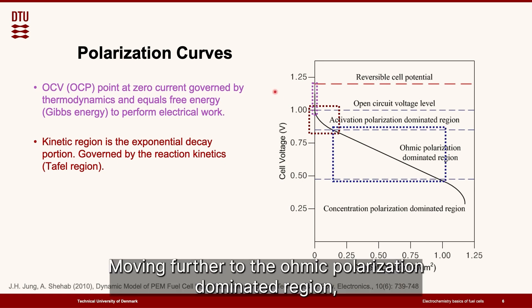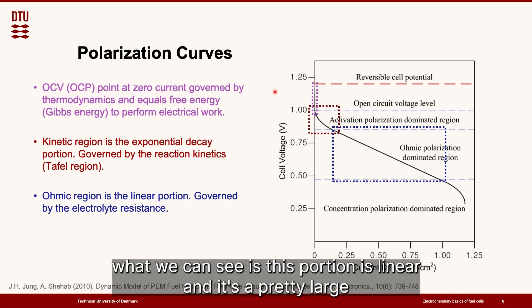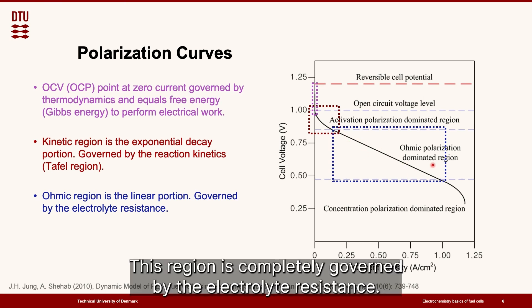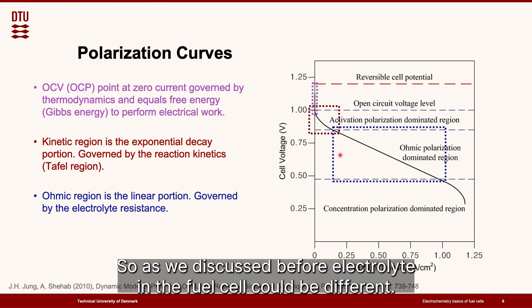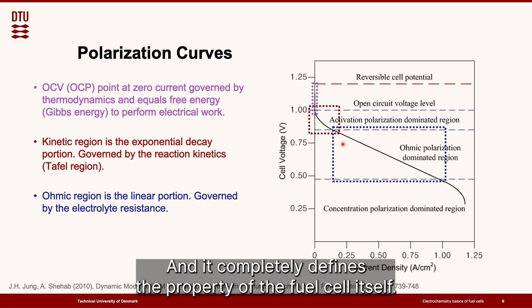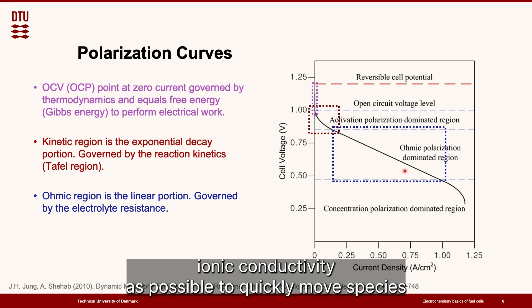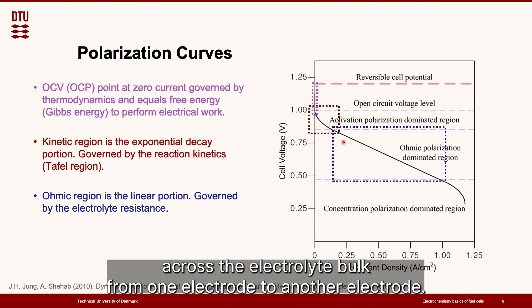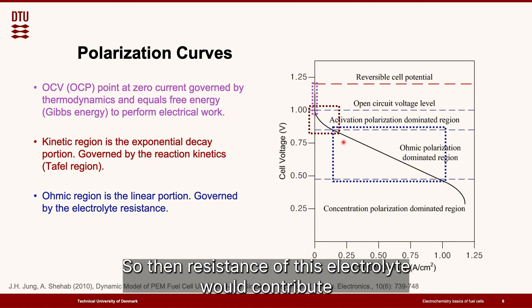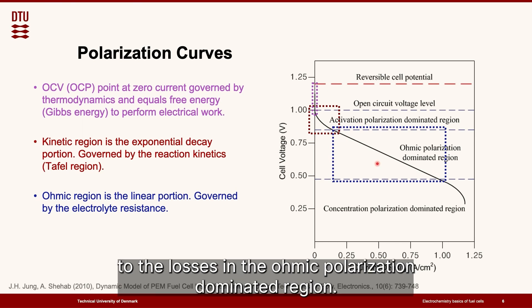Moving further to the ohmic polarization dominated region, what we can see is this portion is linear and it's pretty large portion of the graph. This region is completely governed by the electrolyte resistance. So as we discussed before, electrolyte in the fuel cell could be different and it completely defines the property of the fuel cell itself. So what we need to understand is that our electrolyte should possess as high ionic conductivity as possible to quickly move species across the electrolyte bulk from one electrode to another electrode. So then resistance of this electrolyte would contribute to the losses in the ohmic polarization dominated region.